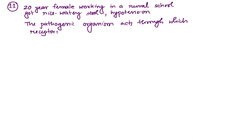Hello everyone, I am Dr. Shankar De. Welcome to the second session of NEET PG recall question discussion, questions number 11 to 20. Starting with question number 11: a 20-year-old female working in a primary school got rice water stool and hypotension. The pathogenic organism acts through which receptor?